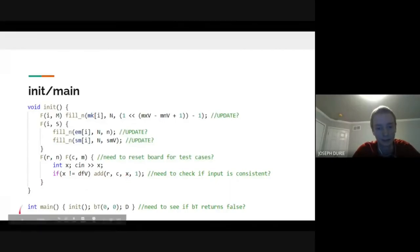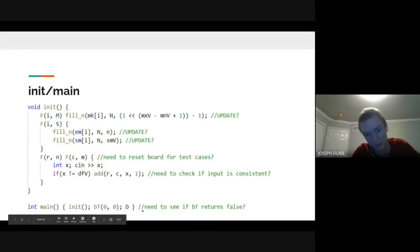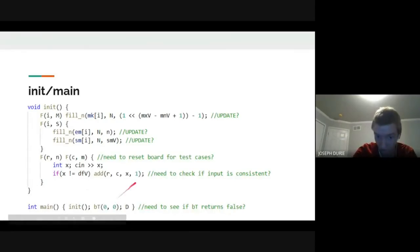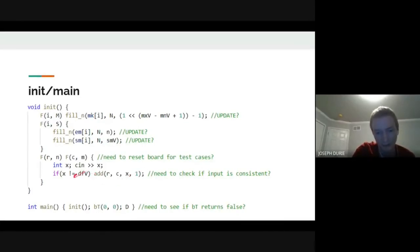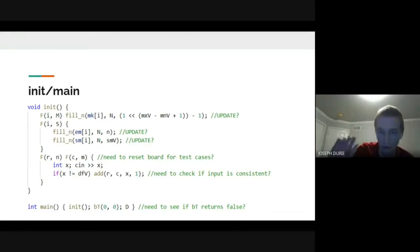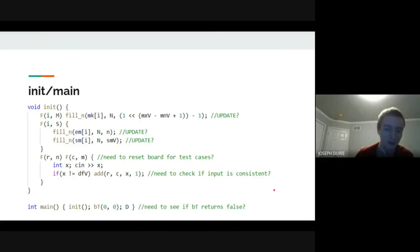A few things to be aware of in main: if there is no solution, backtrack() returns false—handle that if needed. For multiple test cases you may need to reset the board. Also, if the input might be inconsistent (e.g., two equal values adjacent), you may need to validate the initial board, though most ICPC problems guarantee a valid solution exists.